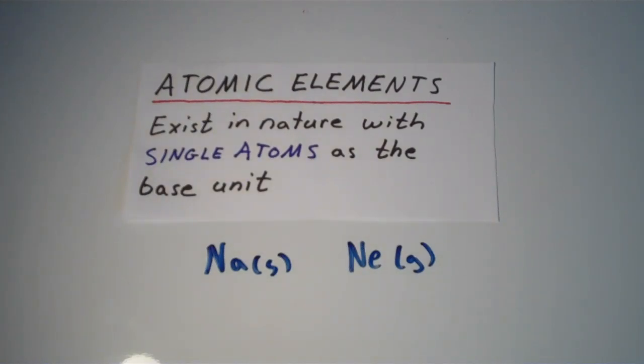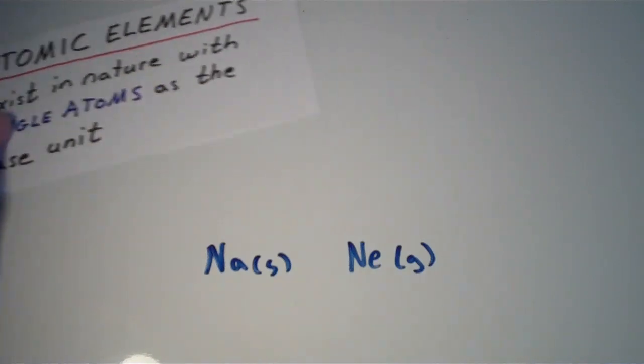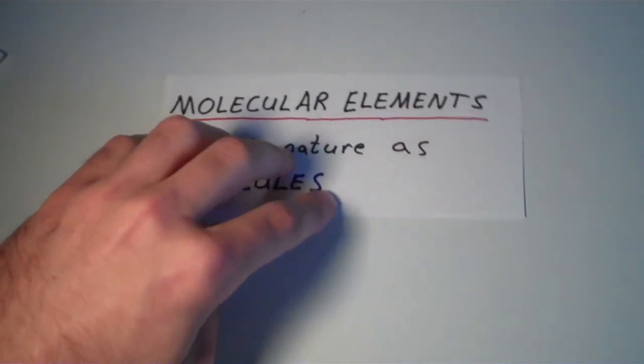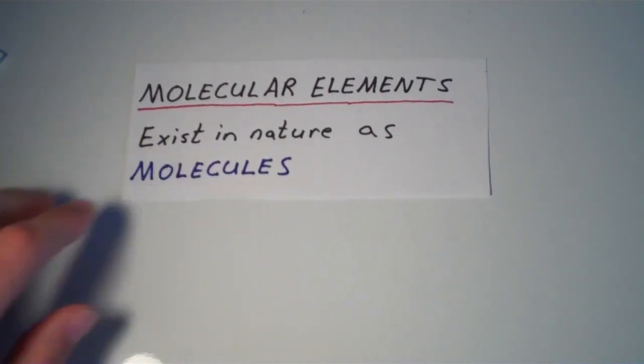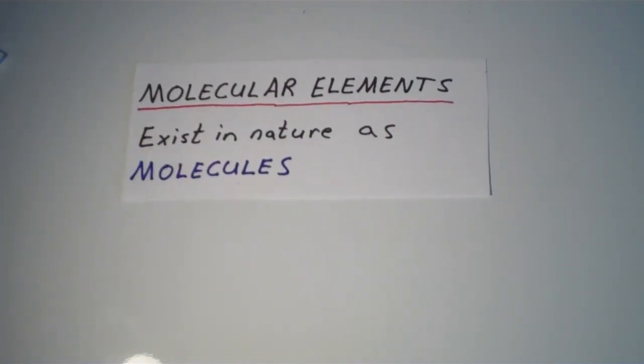Most elements are atomic elements, but there are some that are actually what we call molecular elements. And molecular elements exist in nature as molecules, which of course are two or more atoms that are covalently bonded together.